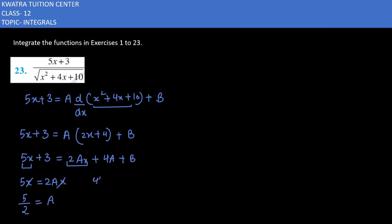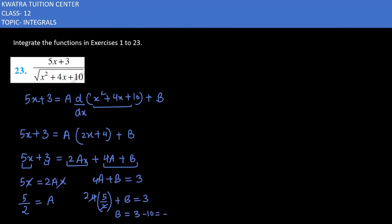Now to find B: we have 4A + B = 3. Substituting A = 5/2, we get 4 × (5/2) = 10. So B = 3 − 10 = −7.